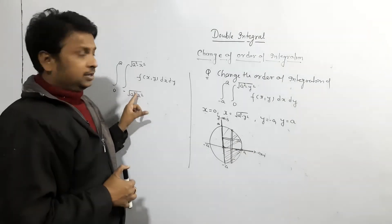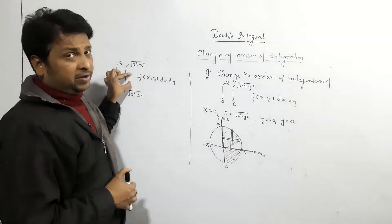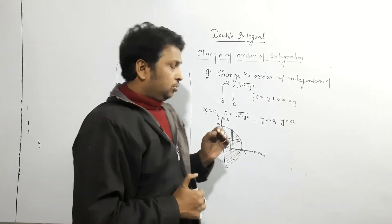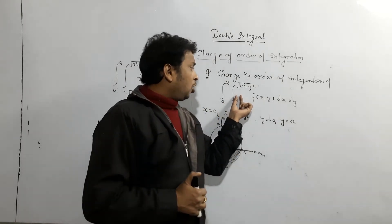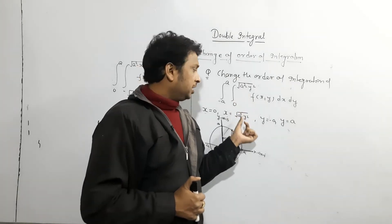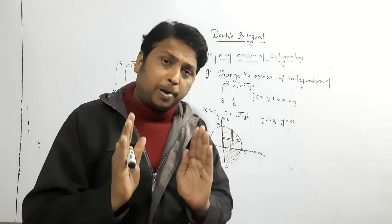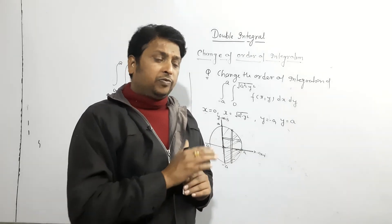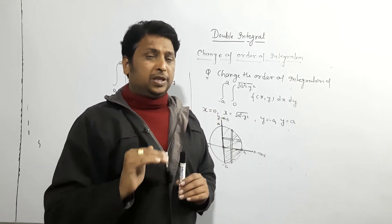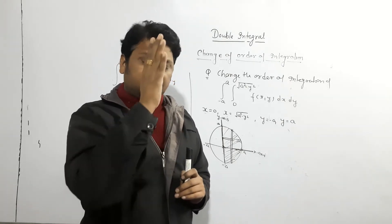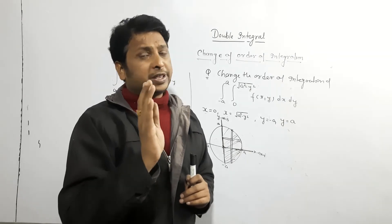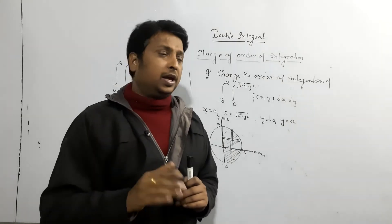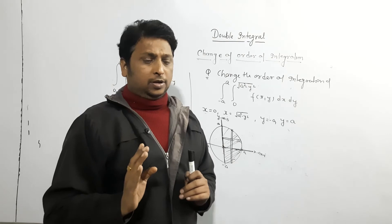The limit only matters here. Since the y limit is given first, it means first we integrate with respect to y and then x. So this is the solution. Again — based on the given limits, first draw the picture and see the bounded region. If they have taken a horizontal strip, the x limit is given; if a vertical strip, the y limit is given. If they have taken a horizontal strip, you take a vertical strip and rewrite the limits — that's all.